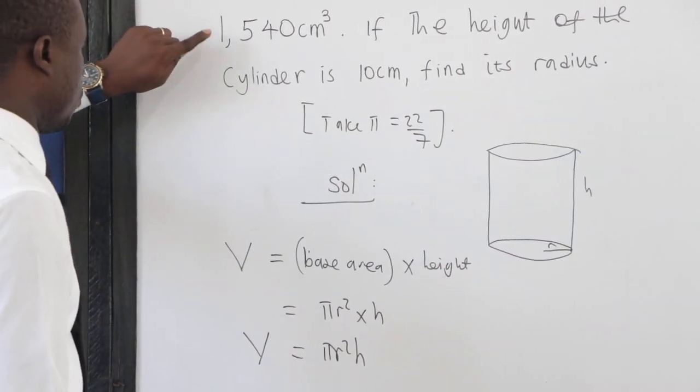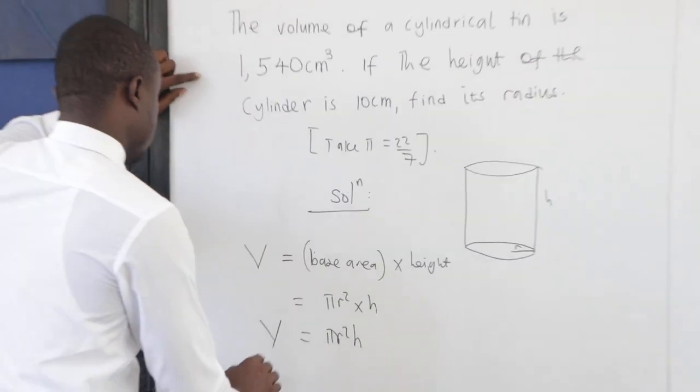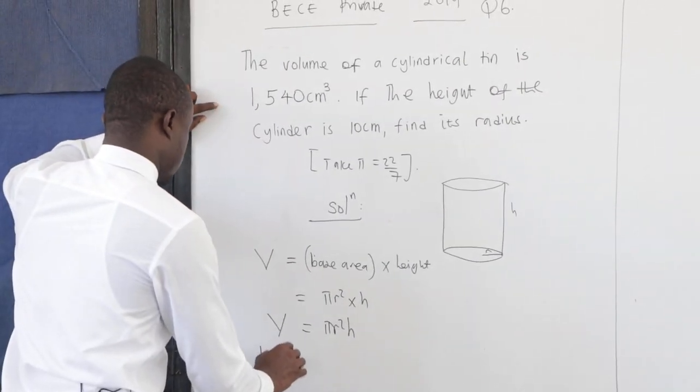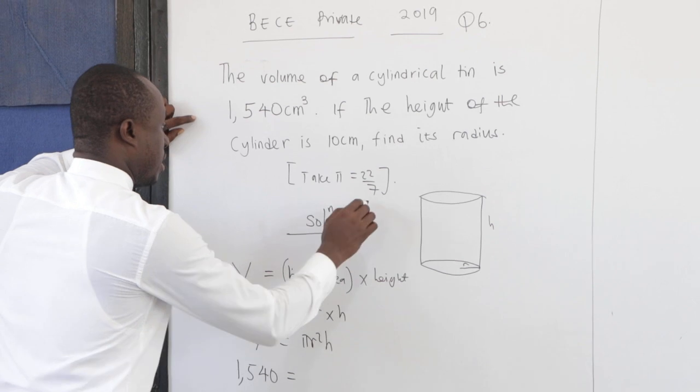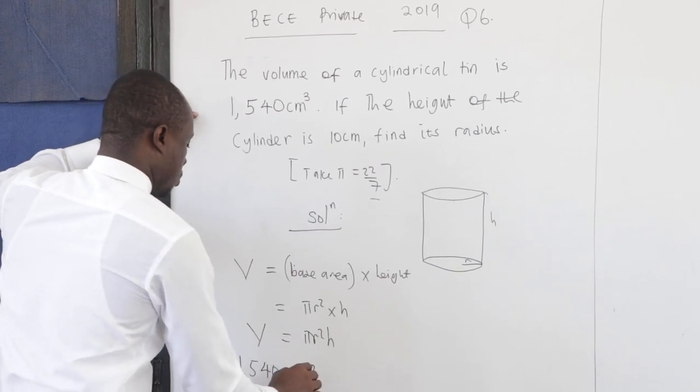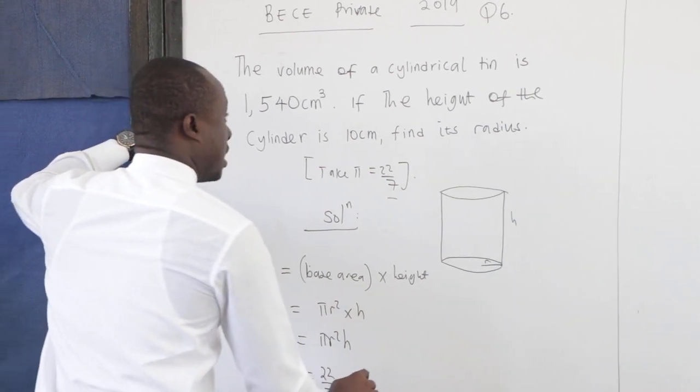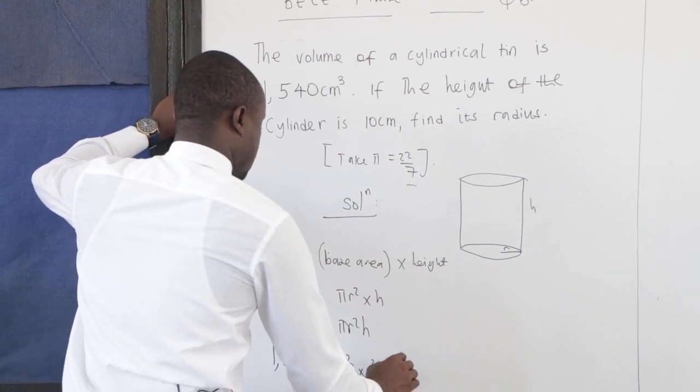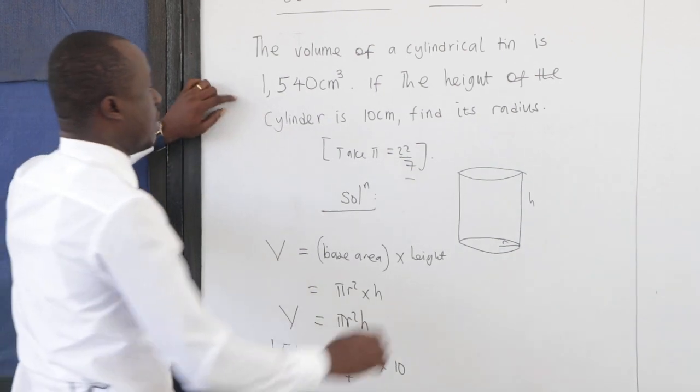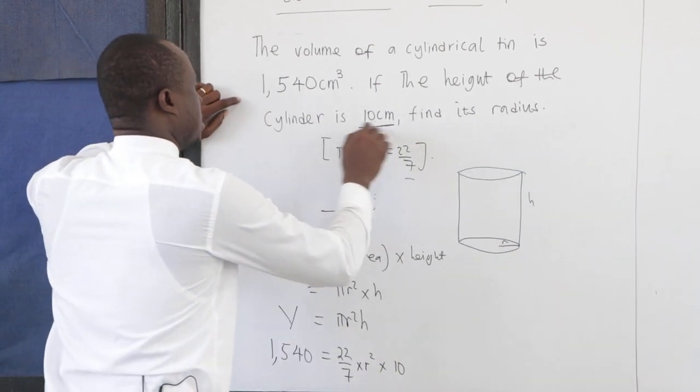Now what have we been given? We've been given the volume of 1,540. π is given as 22/7. We are looking for r. Now what is our height? Our height is 10. From the question, the height is 10.